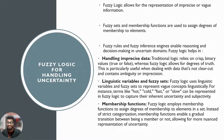Fuzzy logic uses linguistic variables and fuzzy sets to represent vague concepts linguistically. For instance, terms like hot, cold, fast, or slow can be represented in fuzzy logic to capture their inherent uncertainty and subjectivity. Fuzzy logic employs membership functions to assign degrees of membership to elements in a set. Instead of strict categorization, membership functions enable a gradual transition between being a member or not, allowing for a more nuanced representation of uncertainty.